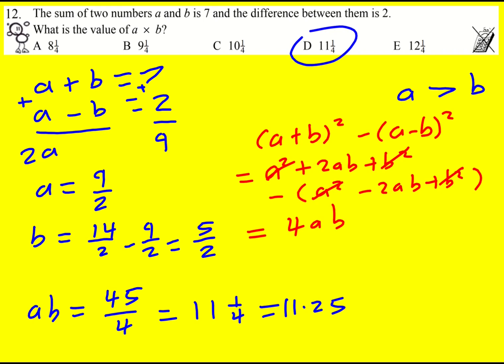So a plus b squared is 49 and if you minus a minus b squared it's going to be 4, so we get that 4ab is equal to 45, which means that ab is equal to 45 over 4.